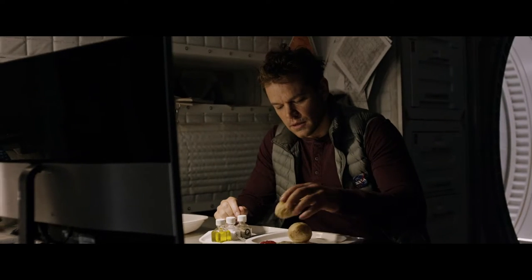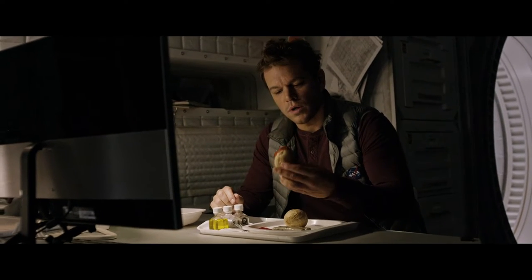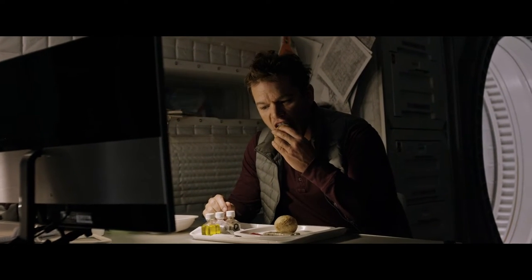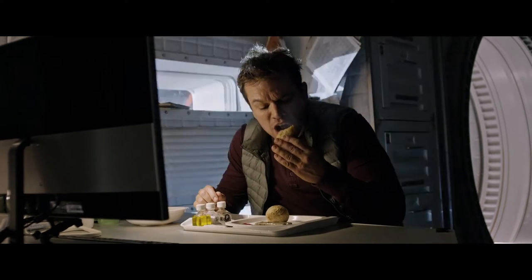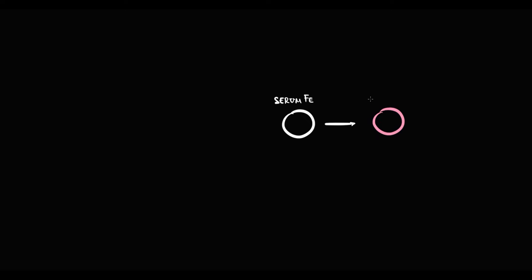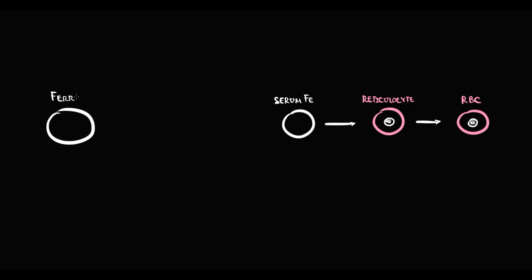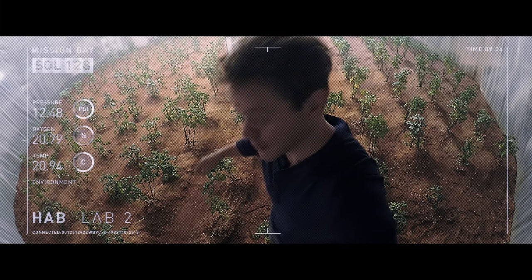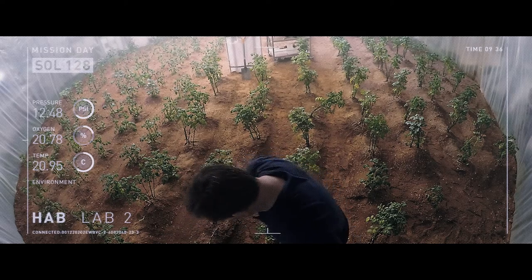To simplify, we can think about the iron in the blood as the food on our table — it's the product we can use straight away to produce reticulocytes and then red blood cells. Ferritin is the food in the storage site, like a cellar.